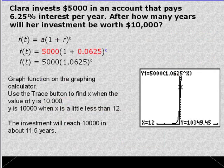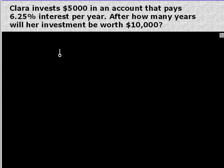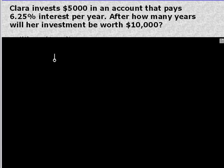Let's look at our problem. Clara invested $5,000 in an account that pays 6.25% interest per year. After how many years will her investment be worth? First, we have to figure out the equation that models this. Remember, our model is A(t) = a(1 + r)^t. In this case, she's earning interest. So it's going to be 1 plus r to the t power.